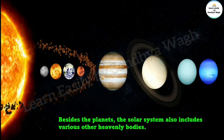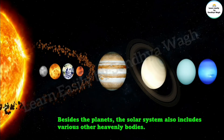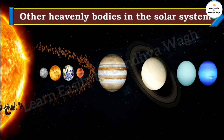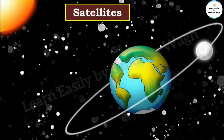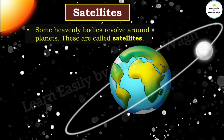Besides the planets, the solar system also includes various other heavenly bodies. One of these are satellites. Some heavenly bodies revolve around planets — these are called satellites.